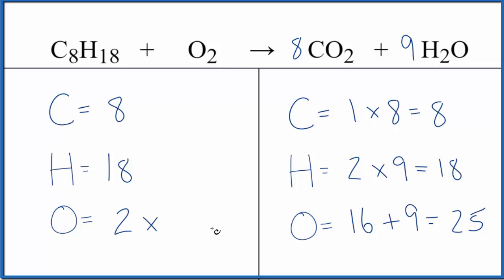2 times some number will give us 25. 2 times 25 over 2, that would give us 25. The 2's would cancel out. And we can just put a 25 over 2 here in front of the oxygen. This equation, it's balanced.